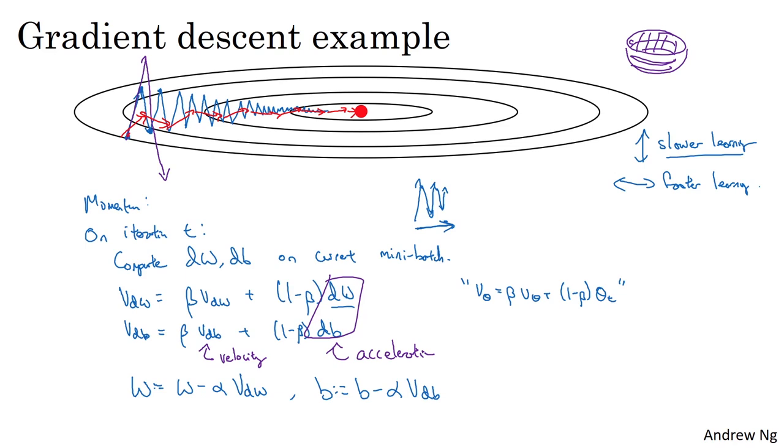And these momentum terms you can think of as representing the velocity. And so imagine that you have a bowl and you take a ball, and the derivative imparts acceleration to this little ball. It's a little ball that's rolling down this hill. And so it rolls faster and faster because of acceleration.